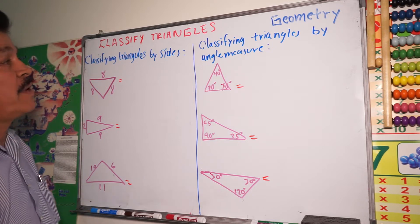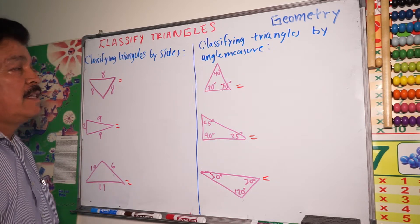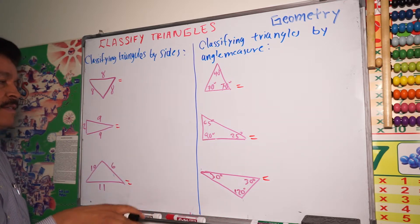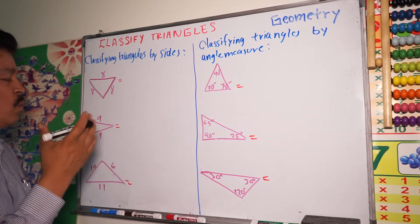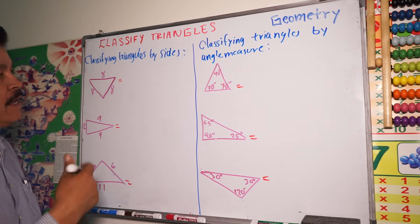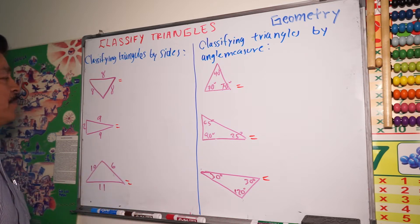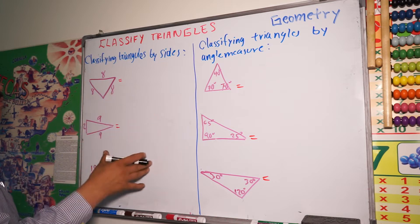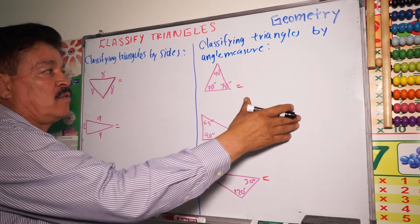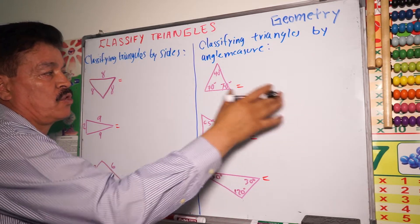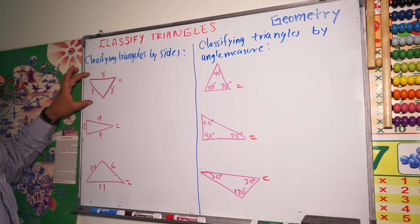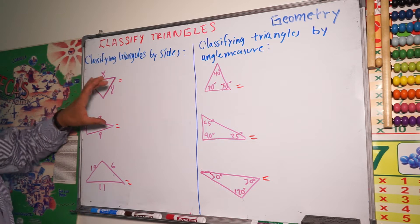The class for today is classifying triangles. This class belongs to geometry. I'm going to show you what kinds of triangles we have in geometry. We are going to study two groups: the first group is triangles classified by size, and the second group is triangles classified by angle measure.